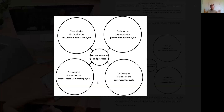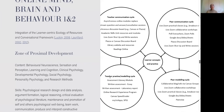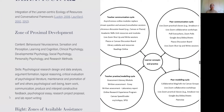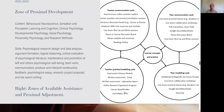Combining the Conversational Framework with Luckin's learner-centric ecology of resources, we selected technologies by asking: what will enable teacher communication, what will enable peer communication, and what will enable the teacher practice cycle and peer modeling cycle? This led to the development of an ecology of resources with the zone of proximal development as the learning outcomes, the zone of available assistance as every resource available in the online subject, and proximal adjustment zones as particular tools that help students meet those learning outcomes.